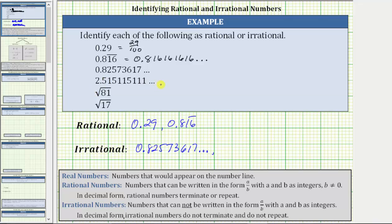The next decimal also does not terminate, and while the decimal part does appear to have a pattern — we have five, one, five, one, one, five, one, one, one — none of the digits repeat in the same way. Therefore, this decimal is non-terminating and non-repeating; it is irrational. Again, while there is a pattern here, there's no way to express the decimal using a bar, and therefore we say it's non-repeating.